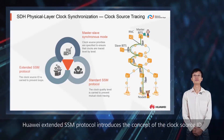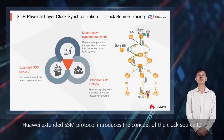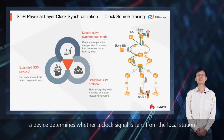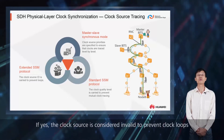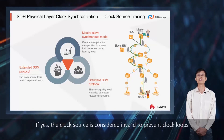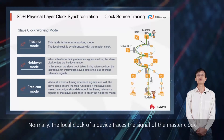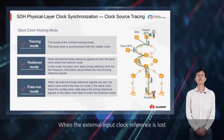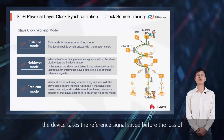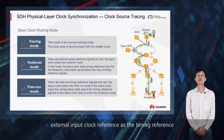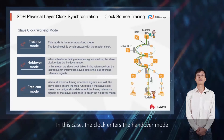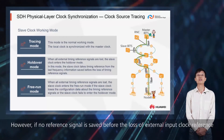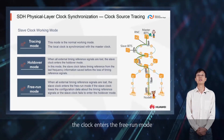Huawei Extended SSM protocol introduces the concept of the clock source ID. Based on this ID, a device determines whether a clock signal is sent from the local station. If yes, the clock source is considered invalid to prevent clock loops. Normally, the local clock of a device traces the signal of the master clock. When the external input clock reference is lost, the device takes the reference signal saved before the loss as the timing reference — the clock enters the holdover mode. However, if no reference signal is saved before the loss, the clock enters the free run mode.